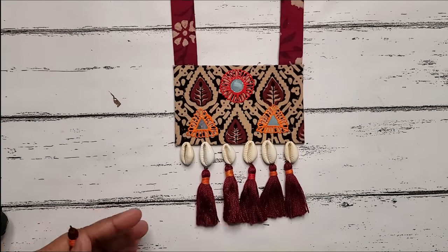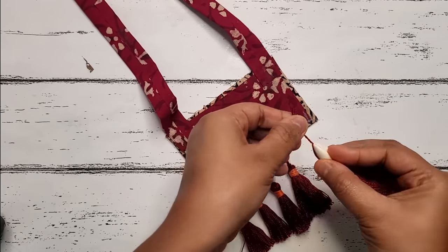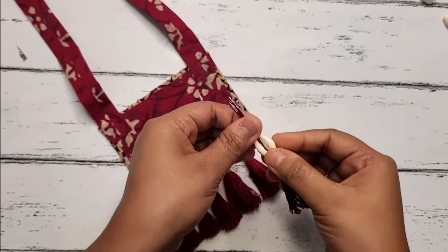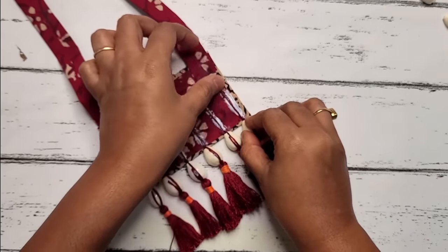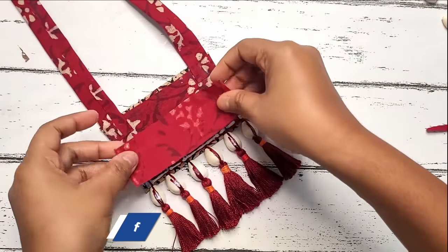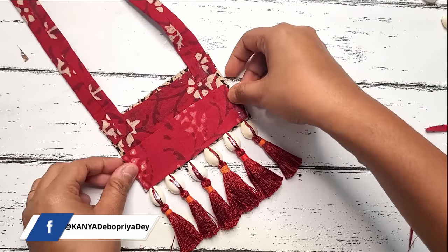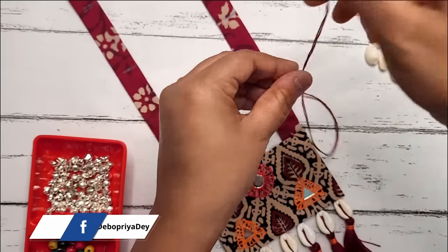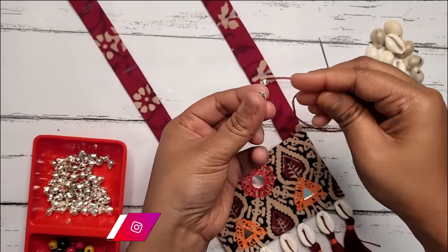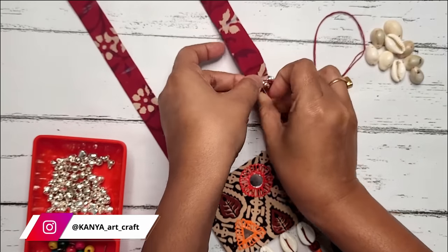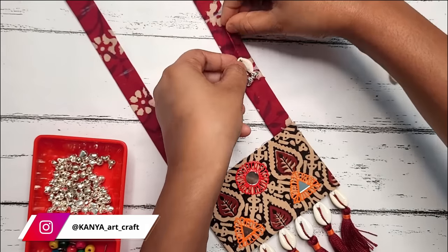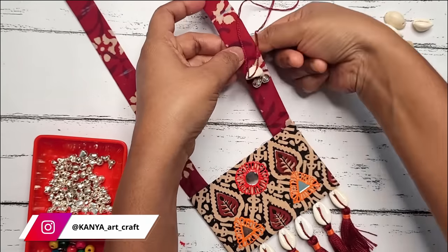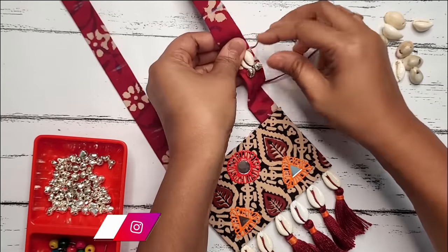Here I'm taking some cowrie shell and some handmade tassels. Now it's time to stitch everything together. Applying glue and sticking the tassels on the back side of the pendant, covering the back side with glue and sticking a fabric to secure it properly. Now stitching some gungru charms and cowrie shell on the dory part, stitching the cowrie shell properly with the fabric dory to secure.